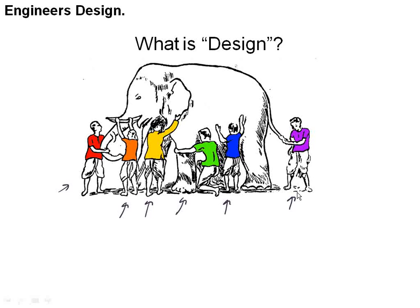So oft in theologic wars, the disputants tread on in utter ignorance of what each other mean, and prate about the elephant, not one of them has seen. This is kind of a silly poem — you've perhaps heard it in elementary school. But it really is true about design, in that design is to us what we do. This is important, because as you go through a design process, you'll be doing different tasks at different times. Here we're going to consider design somewhat holistically, take what we call a 40,000 foot view, so we can try to understand all of design, and not just one little piece of it.